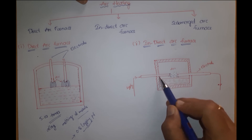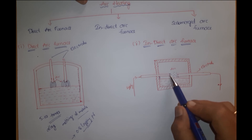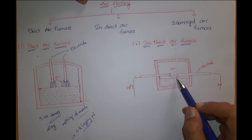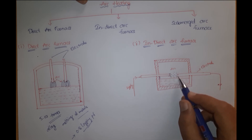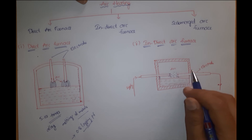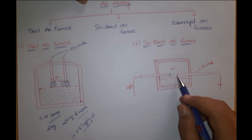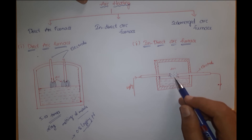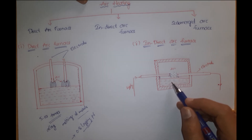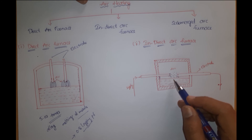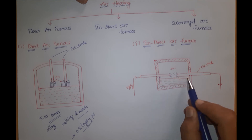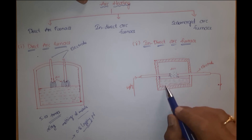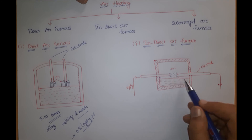By short-circuiting the electrodes manually or automatically, we can produce an arc between the electrodes. The heat from the arc and the refractory lining is transferred to the top layer of the charge. The arc may be produced directly by applying high voltage, or indirectly by contacting the electrodes, supplying low voltage, and then pulling them apart. Heat is produced due to I²R losses of the arc. As there is no current passing through the body of the charge, there is no stirring action, so only the top layer gets heated and there is irregular temperature distribution.